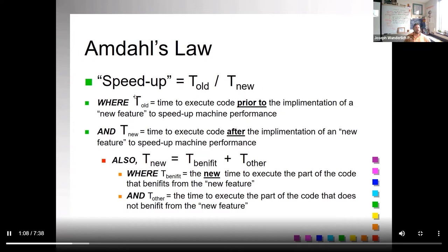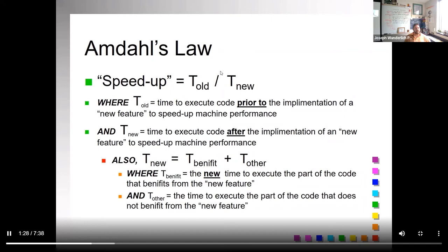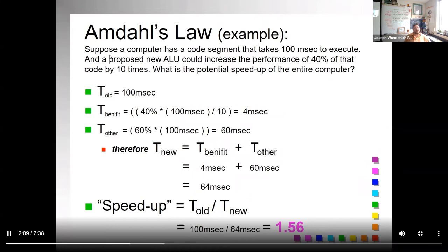In quantitative terms, we have an example here. So suppose you have a computer and you have an old amount of time to execute some code prior to implementing some new speed up feature. The speed up is T_new. T_new is the time to execute code after the implementation of the new speed up measure performance. T_new equals two things: the part that benefits and the part that does not. T_benefit is the new time to execute part of the code that benefits from the new feature and then the time to do everything else.